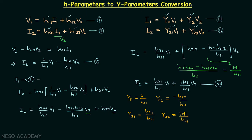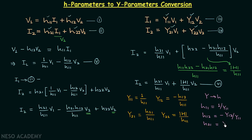Now if you want to perform the conversion of y parameters to h parameters, follow the same idea — derive the h-parameter equation forms from equations 3 and 4. Once you do that, you will find: h11 = 1/y11, h12 = −y12/y11, h21 = y21/y11, and h22 = det[Y]/y11. That is all for this lecture — see you in the next one.